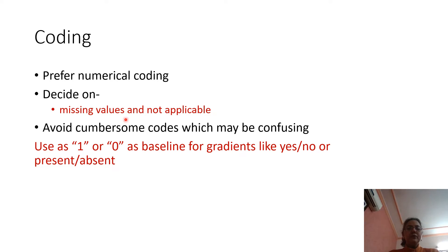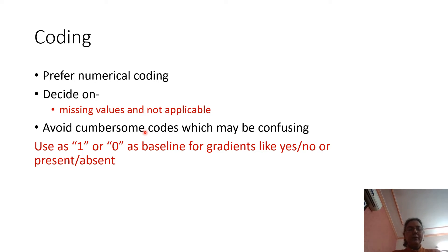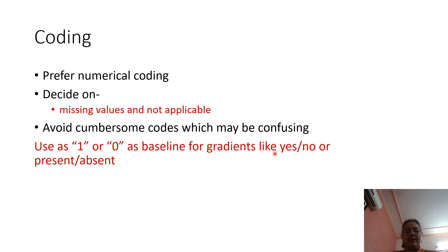If we give number 1 to walking and number 2 to cycling, we cannot combine these as 1 and 2 if the person is involved in both, as this will create problems during analysis. We can use 1 and 0 for dichotomous variables like yes/no, present/absent, or even 1 and 2.